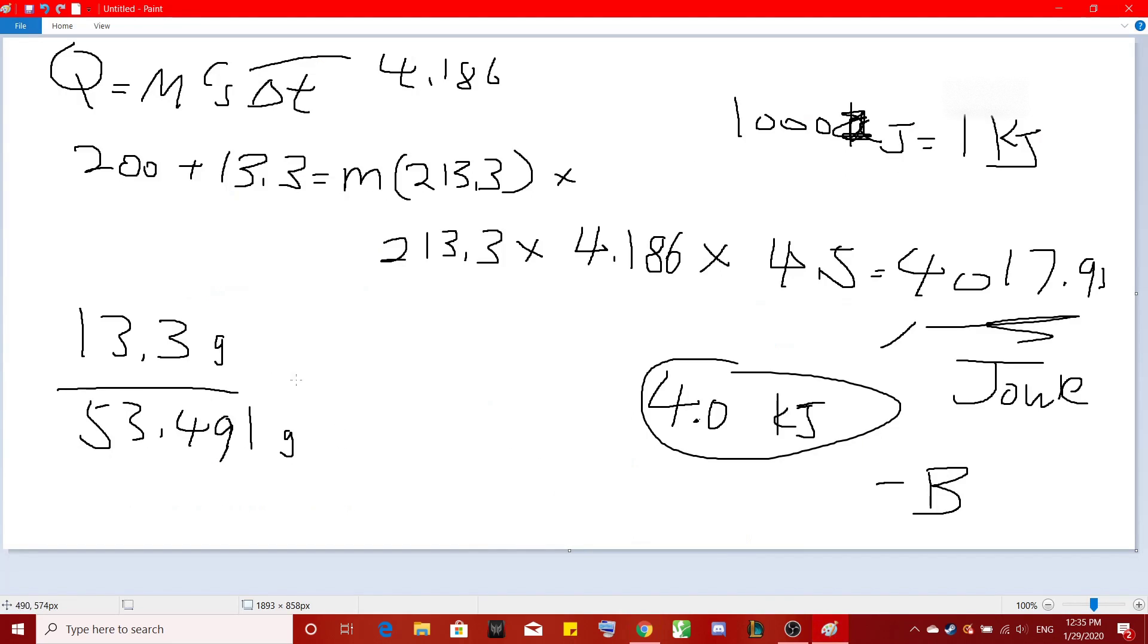And then we take how much mass is given, 13.3 grams. Divide this. This gives you moles of the ammonium chloride. The answer is 0.248-ish moles of NH4Cl.